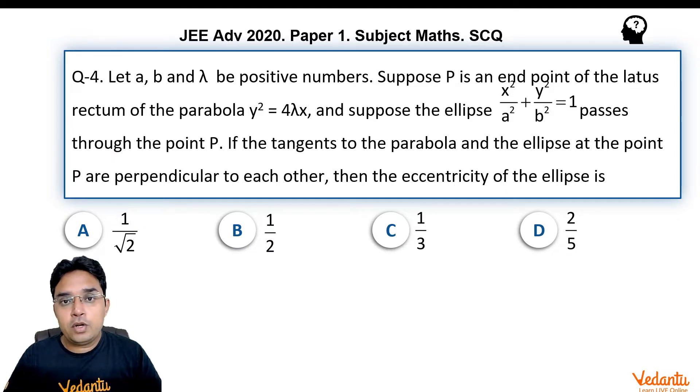A very important topic that is very frequently asked in JEE Advanced. Every year we see 2 questions, 3 questions from this topic. Here they have asked questions by combining parabola with ellipse. Let us see what this question is.